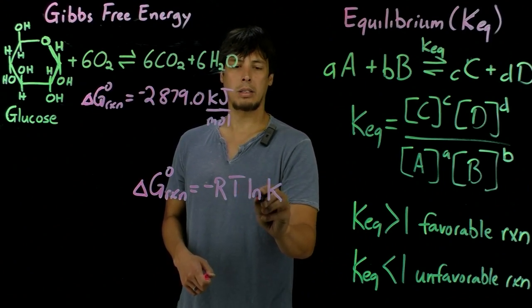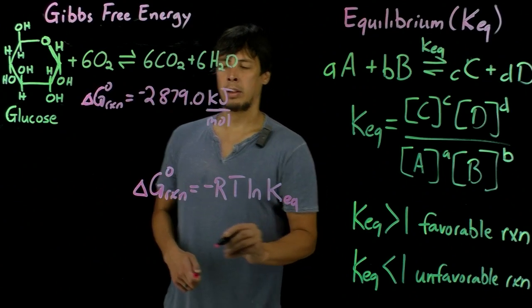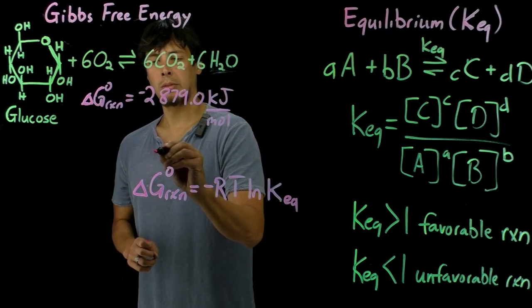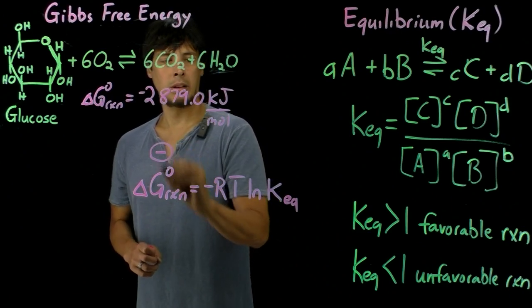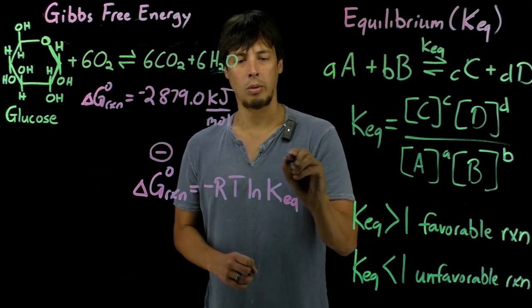and then this is the LN of equilibrium constant. And so what we see is in a favorable reaction, del G will be negative, and the Keq will be greater than one.